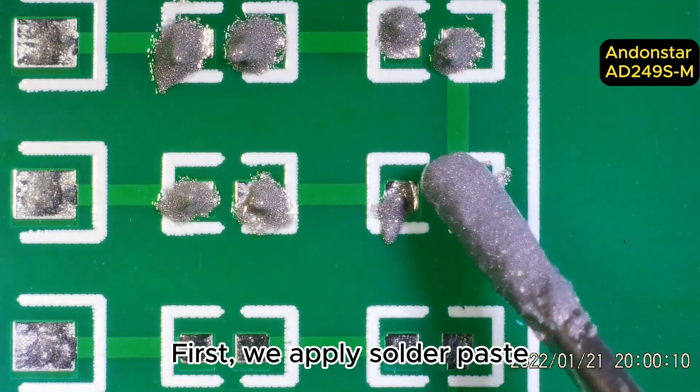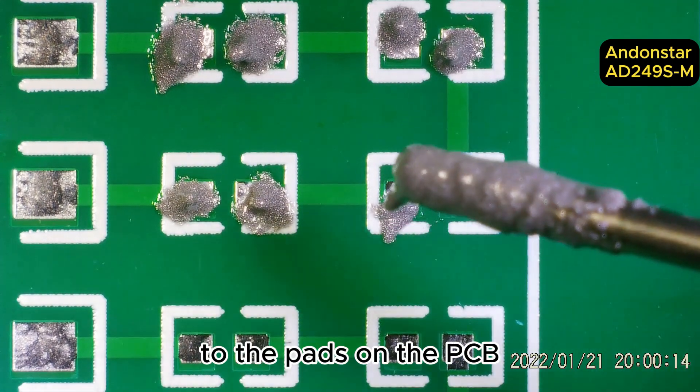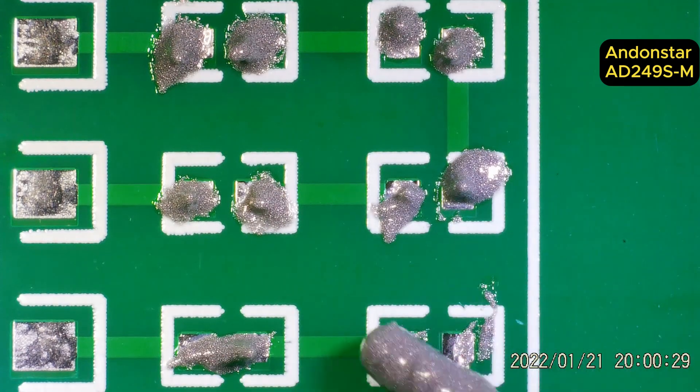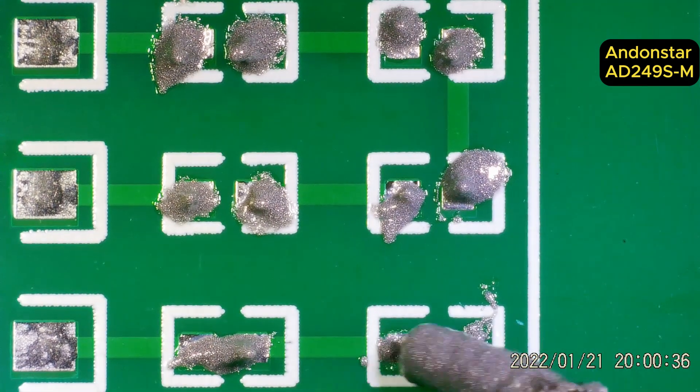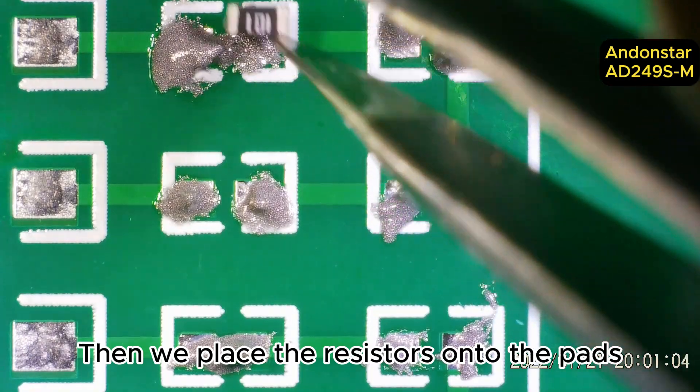First, we apply solder paste to the pads on the PCB. Then we place the resistor onto the pads.